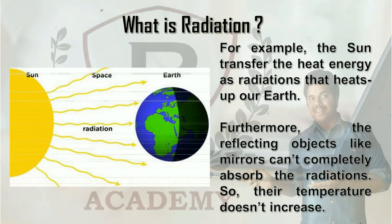The sun transfers the heat energy as radiation that heats up our Earth. Furthermore, reflecting objects like mirrors can't completely absorb the radiation, so the temperature doesn't increase.